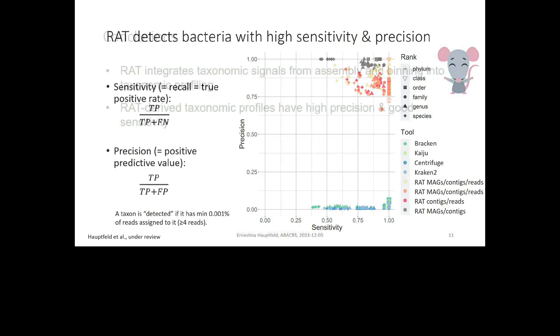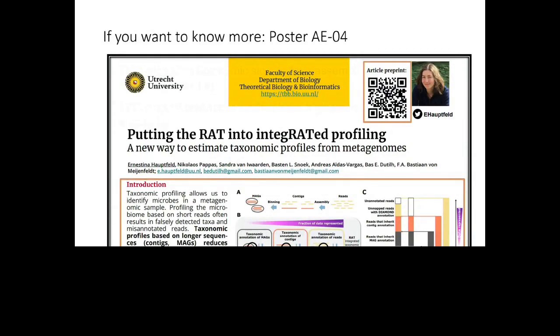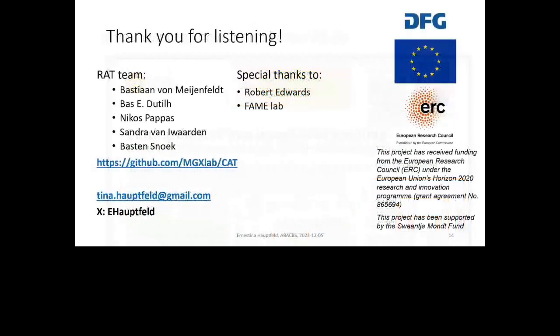So we have a very happy little RAT. So in conclusion, RAT integrates taxonomic signals from MAGs, contigs, and reads to make one integrated taxonomic profile and thereby connect the taxonomic profiling step to the assembly and to binning steps. And then the profiles, the taxonomic profiles that are made by RAT have good precision and good sensitivity. And if you want to know more, I also have a poster that I'll be presenting today. And if you come see me, I'll explain everything to you about how RAT works exactly. And then you might also find out why I think that there is a rat in the CAMI dataset. Thank you so much for listening. Thanks for letting me give a talk here, special thanks to the FAMELAB for hosting me for the last three months. You guys are fantastic. I really enjoyed my time here and there's my contact information.